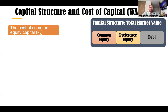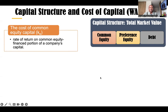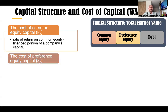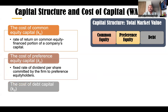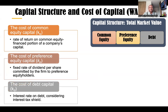For the equity portion, there is the cost of common equity, denoted as K-E — that is the rate of return on the common equity finance portion of the company. For preference equity, we have the cost of preference equity denoted as K-P, which is basically a fixed rate of dividend per share committed by a firm to preference equity holders. For the debt portion, we have the cost of debt capital, denoted as K-D, which is the interest rate on debt taking into account the interest tax shield — meaning tax savings on interest expenses.